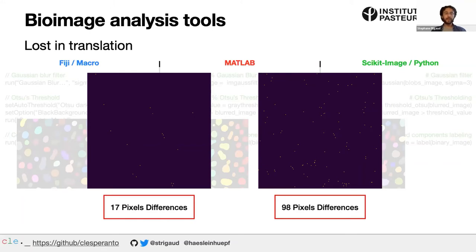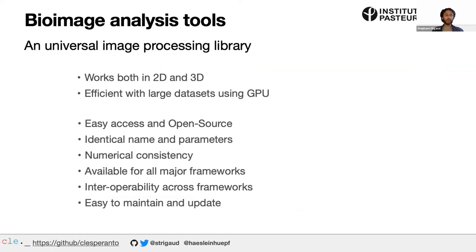Ideally, we want a very good image processing library with 2D and 3D processing, GPU acceleration for large datasets, easy-access installation, open source, and the same function names and usage whatever framework or language you're using — with consistent results in terms of computational output.